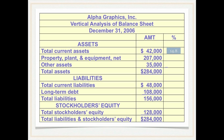We would do the same with property, plant, and equipment net. Remember that when you see the word 'net' that means something has been taken out — in this case it means net of depreciation, so this is less depreciation. Property, plant, and equipment net is $207,000; dividing by 284,000 gives 72.9 percent of total assets. Other assets would be 35,000 divided by 284,000 for 12.3 percent.